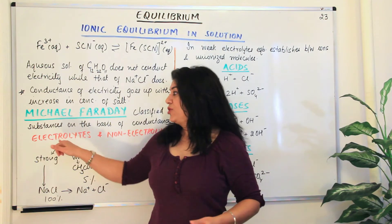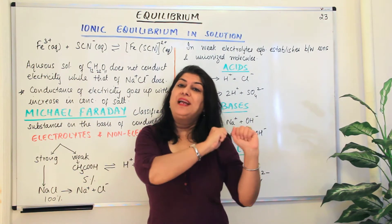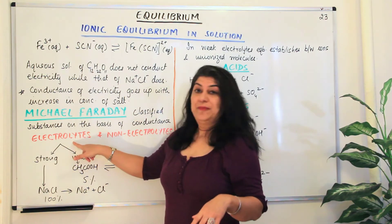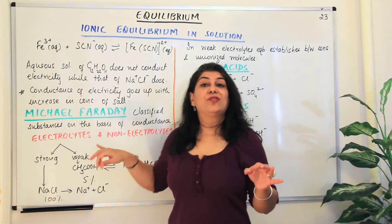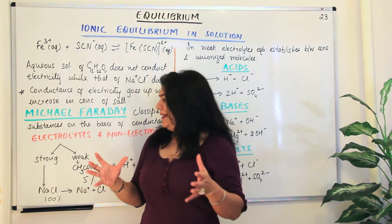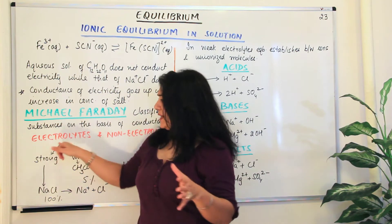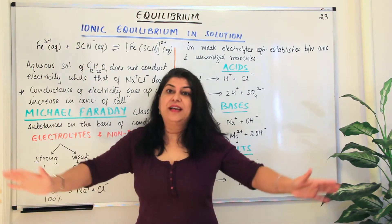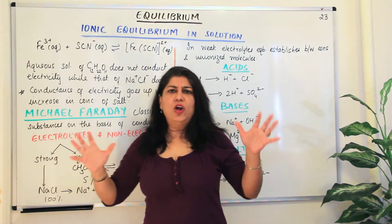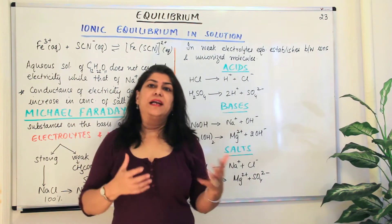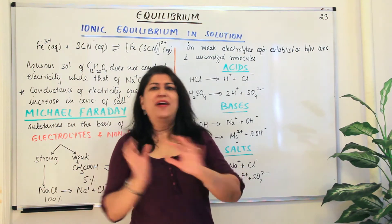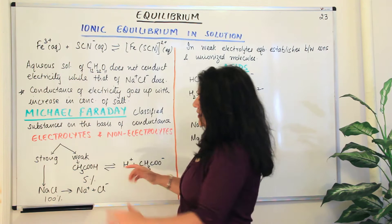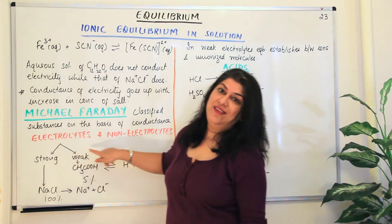Logically, on the basis of what we discussed, the electrolytes would be ionic in nature and the non-electrolytes would be covalent in nature. Ionic compounds which dissolve in water and conduct electricity are called electrolytes. Faraday further classified electrolytes into two categories, as not all ionic compounds conduct electricity equally well — some are very good conductors while some do not conduct as readily. He classified them into strong electrolytes and weak electrolytes.